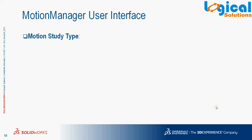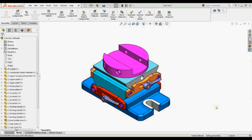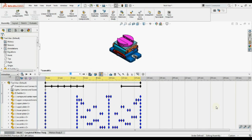Let us see Motion Study types in Motion Manager. The three motion study types available in Motion Manager can be selected from the motion pull-down selection. The three motion study types are: Animation, Basic Motion, and Motion Analysis. This is how you can select the motion study type from the interface by selecting the dropdown and choosing the required motion study.